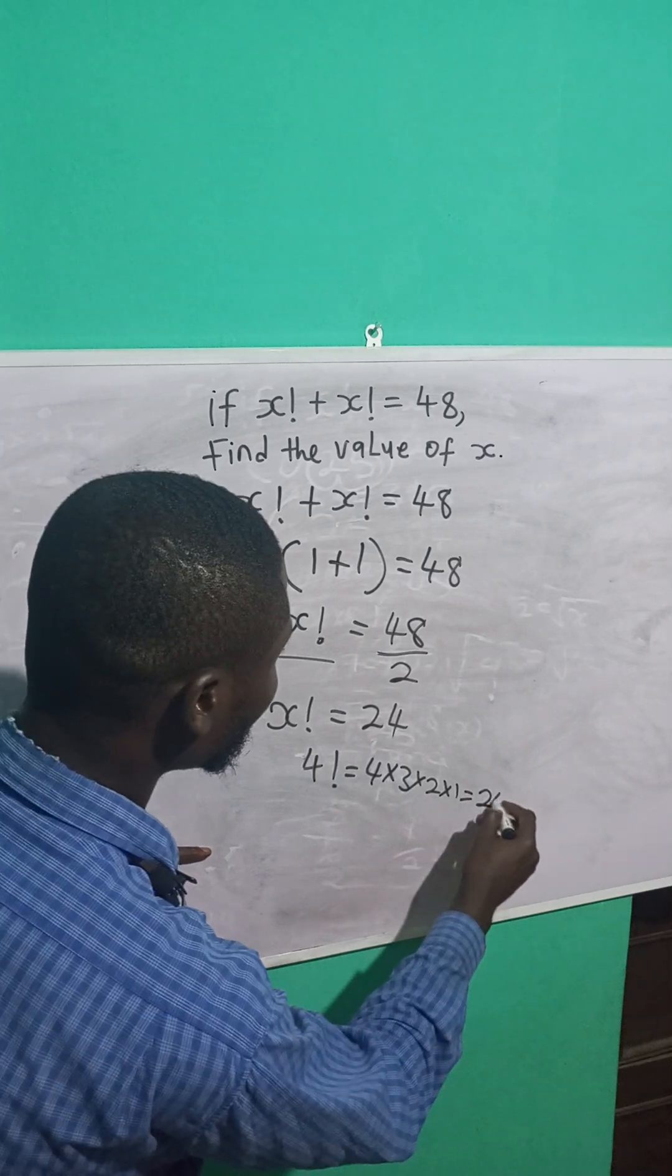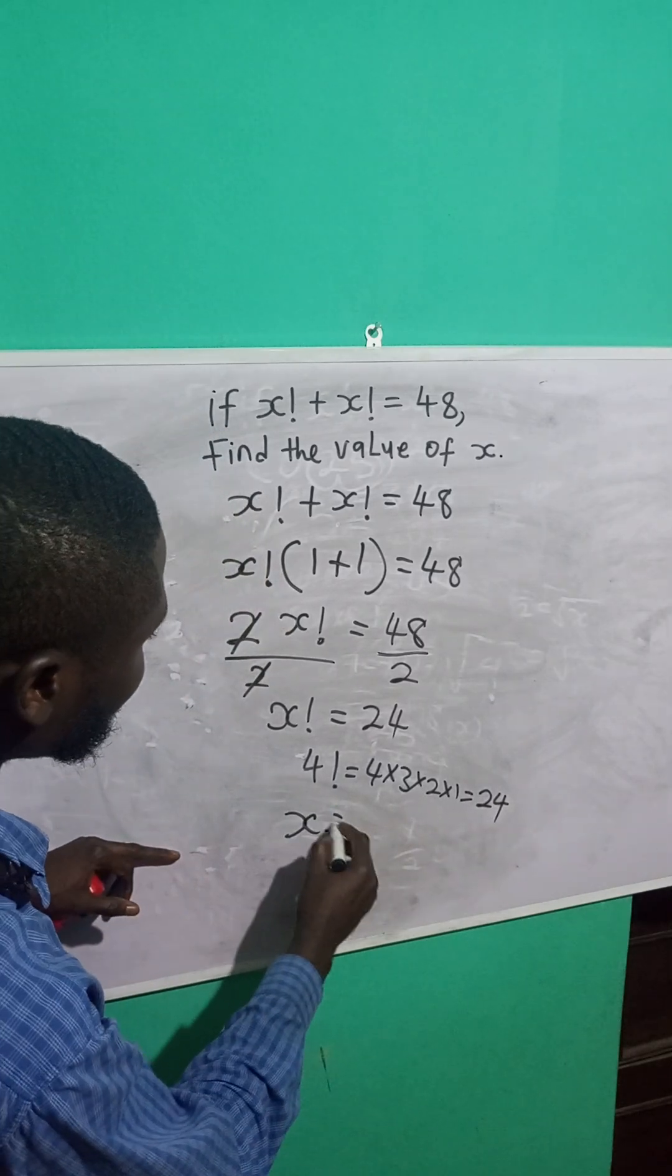And this gives me 24. So the value of x is 4.